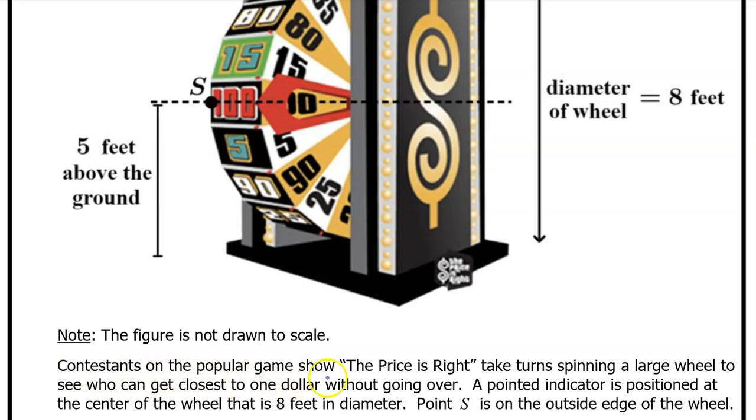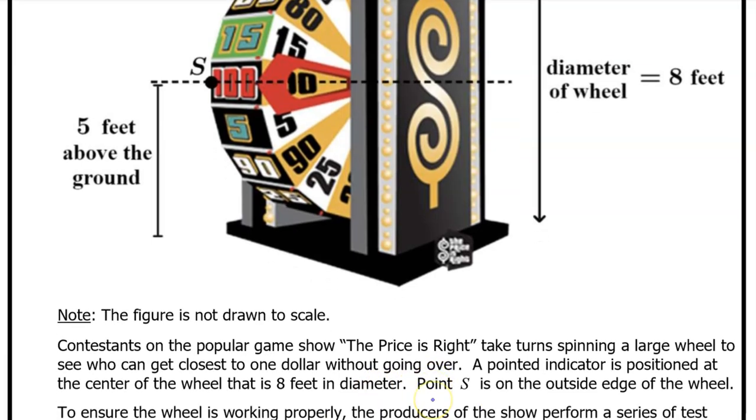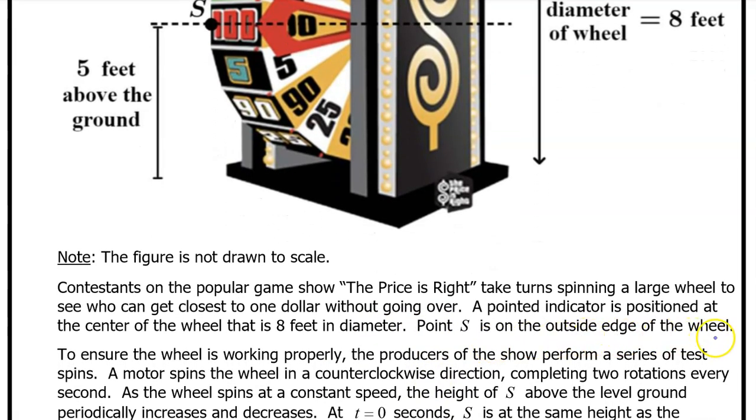Contestants on the popular game show The Price is Right take turns spinning a large wheel to see who can get closest to one dollar without going over. A pointed indicator is positioned at the center of the wheel that is eight feet in diameter. Point S is on the outside edge of the wheel. To ensure the wheel is working properly, the producers of the show perform a series of test spins.